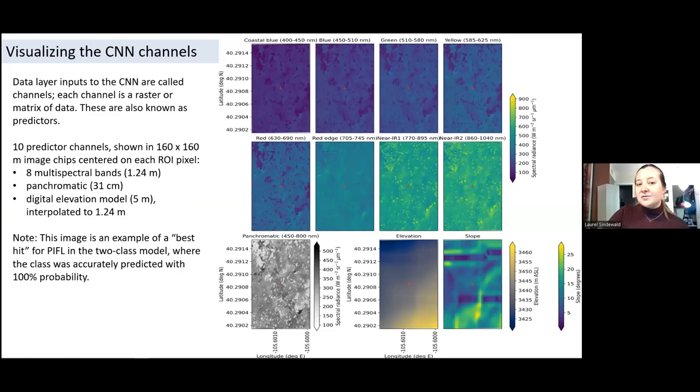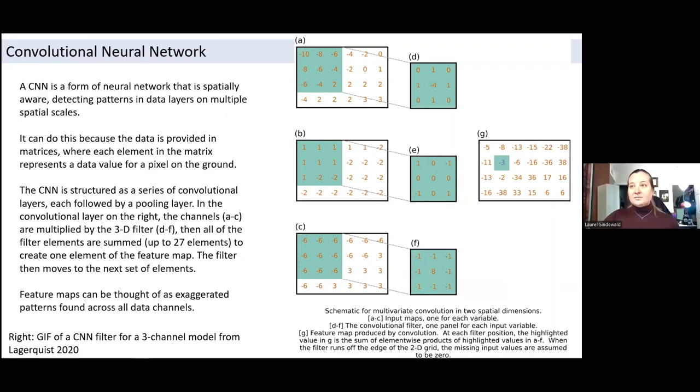Okay, so this figure provides a visual of all 10 data layers the CNN used for classification, which are called channels in the machine learning literature. Each channel is a predictor in the model. CNNs work on a pixel level, so each pixel is treated as an example of a given class, and information is taken from the surrounding 160 by 160 meter image chips for each channel. The aspect ratio is a little off here from the package used to generate the figure, but these are 160 by 160 meters. The slope here is just a visualization of the DEM and was not a separate channel. The patterns you see are likely artifacts from the model or from the interaction process.